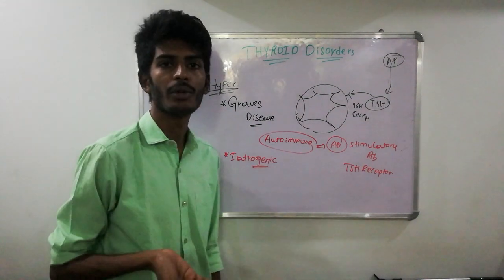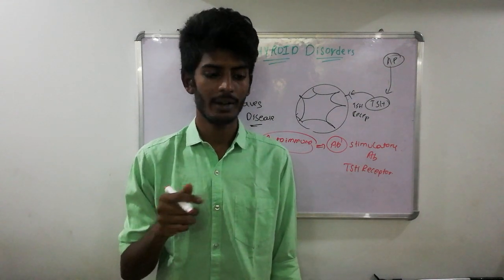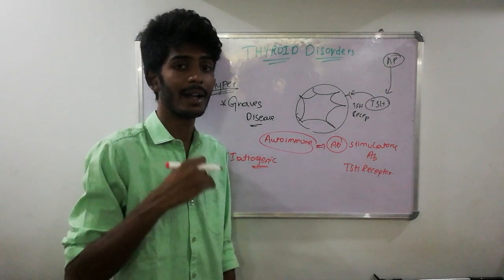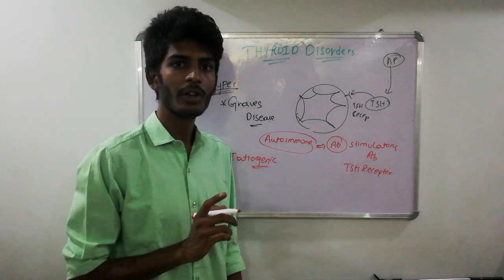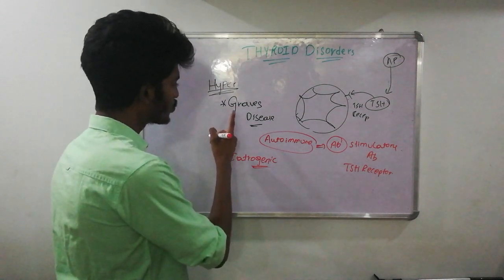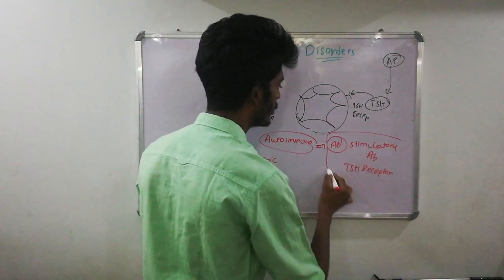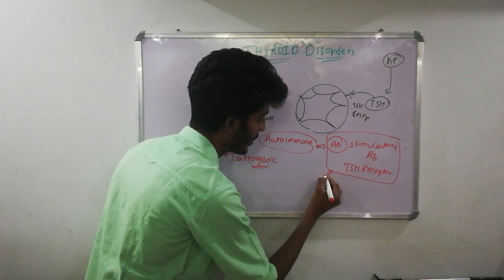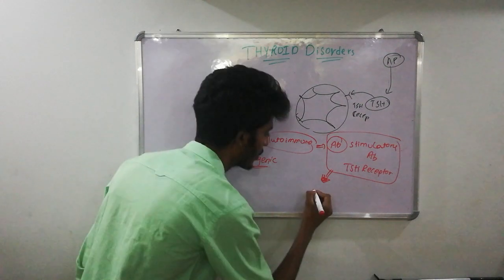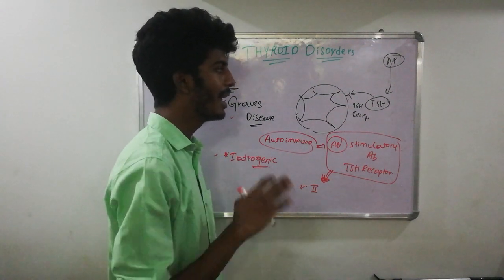Apart from Graves' disease, another cause of hyperthyroidism is iatrogenic — when a doctor prescribes a large dose of thyroid drug, or when medical staff or others take thyroid medication on their own without proper knowledge, for example with the intention of losing weight. Graves' disease belongs to type 2 hypersensitivity reaction. All these causes result in elevated levels of T3 and T4.